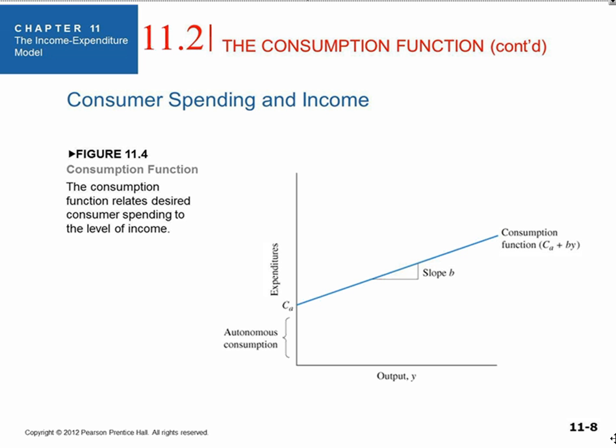We're going to take another look at consumption. Consumption actually has two parts. Before, we assumed it only had one part and it didn't vary with income. In reality, consumption has two parts. One is autonomous consumption — things that people buy regardless of their income, necessities, like toothpaste or some items of food they're going to buy no matter what. The other part is called induced consumption, and that does vary with income.